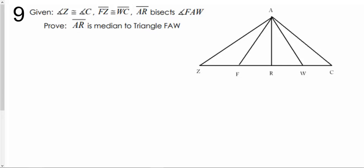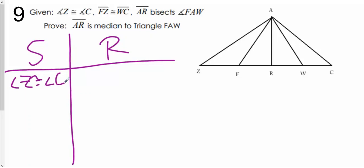So the first thing we need to do is start out with our statement and reason chart. Obviously I'm going to start off with the givens. Angle Z is congruent to angle C, that's a given. FZ is congruent to WC, that's a horrible C. And then AR bisects angle FAW. So these are all my givens.